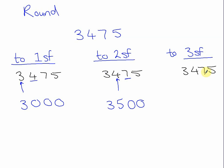To three significant figures, we're looking at this column here, and the five is telling me to round up. So I can go ahead and write the numbers in front of the column we're rounding to — it's not a nine. Five rounds up, so this becomes an eight. And we preserve the size of the number by adding the placeholder zero.